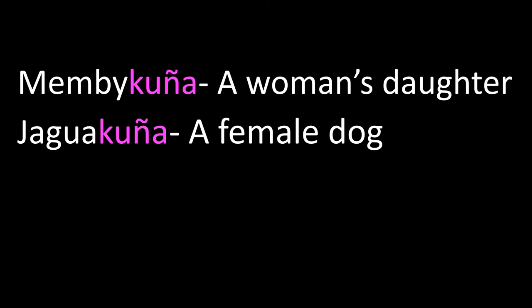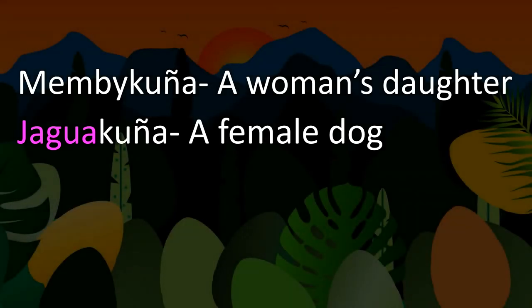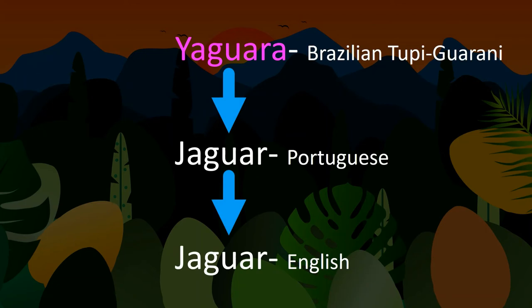Now, this word might look familiar to you — yes, it's the word jaguar. It actually comes from a Tupi-Guarani language spoken in southern Brazil, and meant something like a wolf or beast. But once it was adopted into Brazilian Portuguese, it began to refer to a specific type of panther, and this word then made its way into English. A similar story holds true for the word piranha, but we're getting a little off track here.